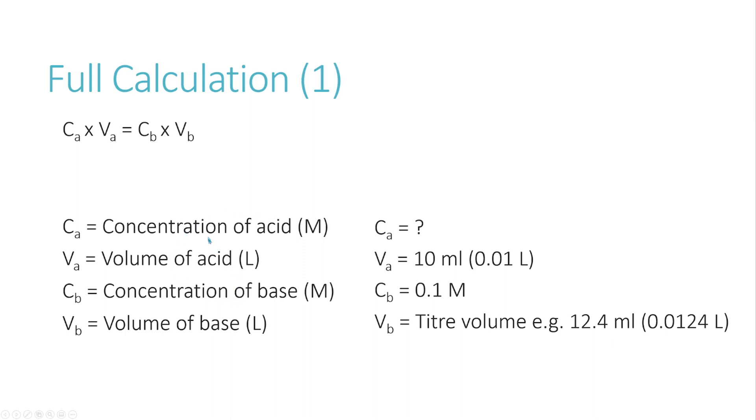Now, as mentioned earlier, we actually need twice the amount of base to acid. And we need to use that information in this equation for it to be accurate. So we actually have to times the acid side of the equation, the concentration of acid times the volume of acid, by 2. This represents how tartaric acid is a diprotic acid.